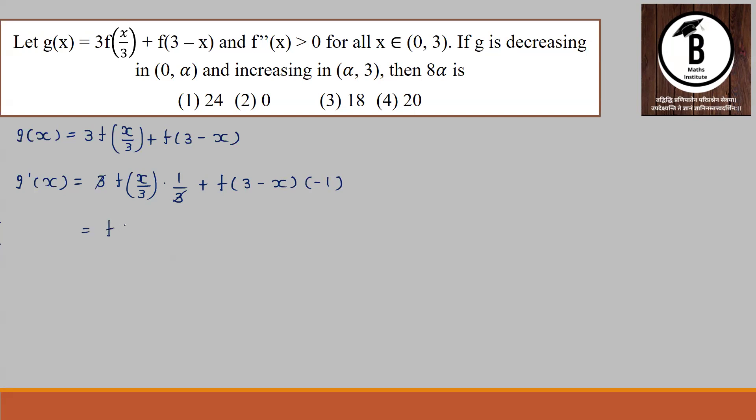3, 3 cancel. So we get G'(x) = f'(x/3) + f'(3-x)(-1). This is G'(x) = f'(x/3) - f'(3-x). This function is decreasing, that means less than 0 between 0 and α.